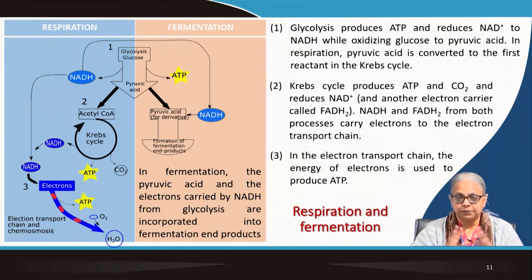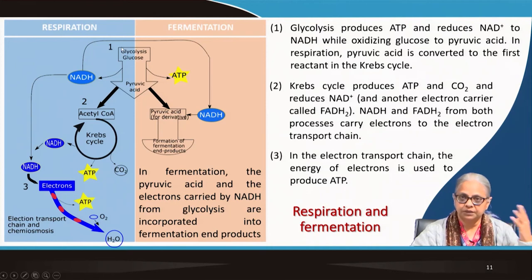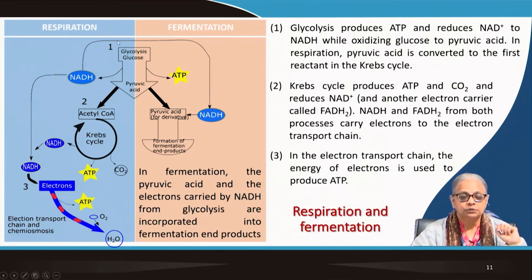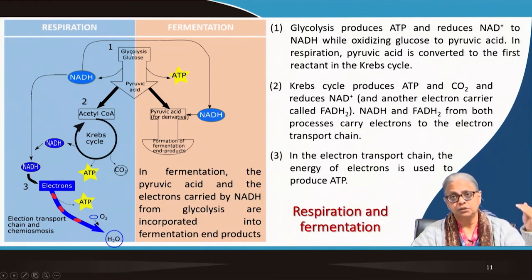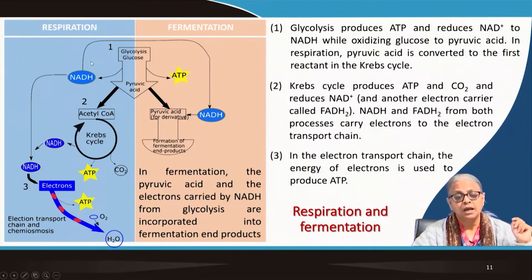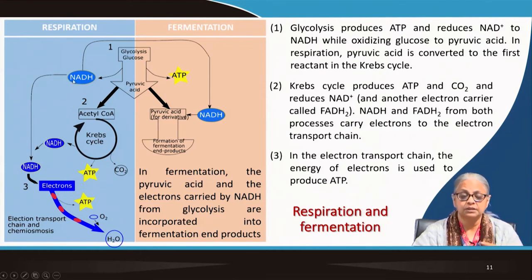The two basic pathways are respiration and fermentation. Our starting compound is glucose — a C6 molecule. This glucose must be broken down into a C3 molecule. Pyruvic acid is a C3 molecule. The process of converting glucose from C6 to C3 is called glycolysis. In this process, both ATP and NADH are generated.